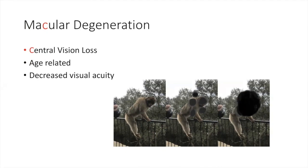Macular degeneration is a central vision loss condition — a progressive degeneration of the macula of the retina. In most cases both eyes are affected either at the same time or one right after the other. Reading and activities requiring sharp vision become impossible. Central vision may disappear altogether. Here you see a picture of a monkey: the first image is clear, the second shows early stage macular degeneration, and the third shows complete central vision loss, which is the late stage.